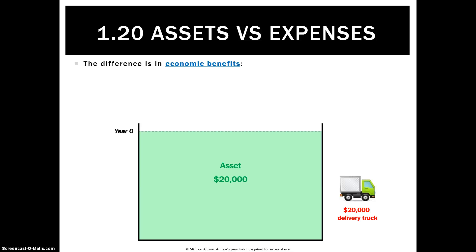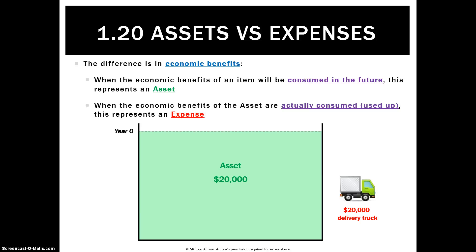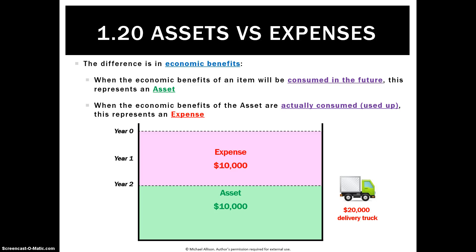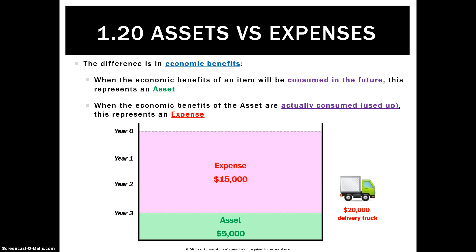Looking at it in a pool metaphor: when we buy the truck at year zero, it's a full pool of economic benefits — everything in that tub represents an economic benefit. After one year, we consume $5,000 of the truck, leaving $15,000 unconsumed. After year two, $10,000 consumed, $10,000 of assets remaining. Year three, $15,000 consumed, $5,000 of asset left. And then by the end of the asset's life, we've consumed all of it — at which point we have a $20,000 expense and no asset for the future.